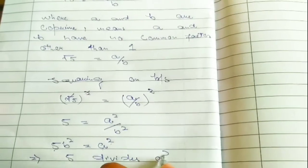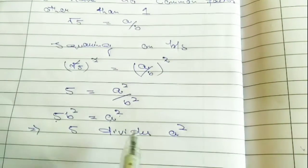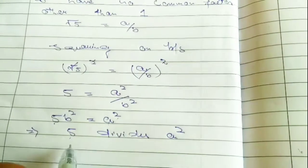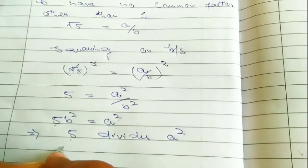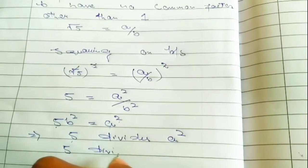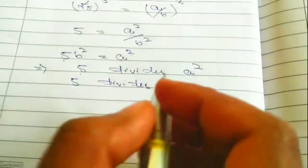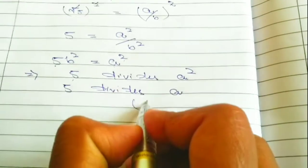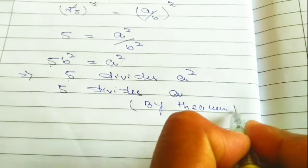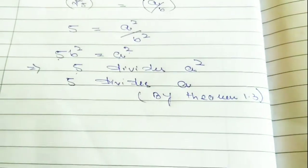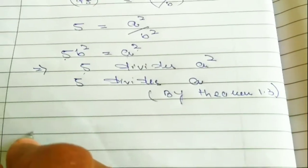So if you remember theorem 1.3, that says if 5 divides A square, it means that 5 divides A. By theorem 1.3, here we can write: